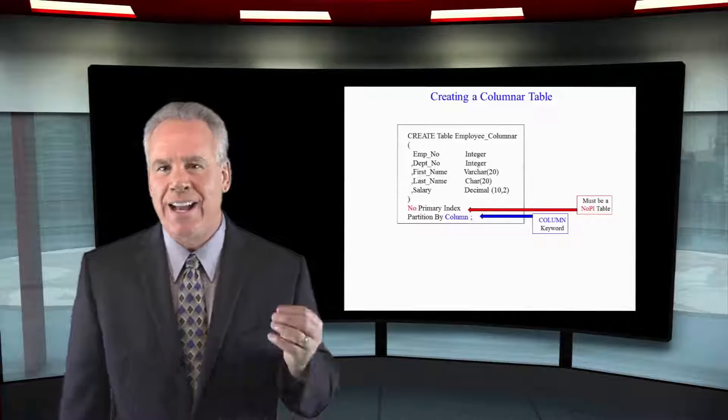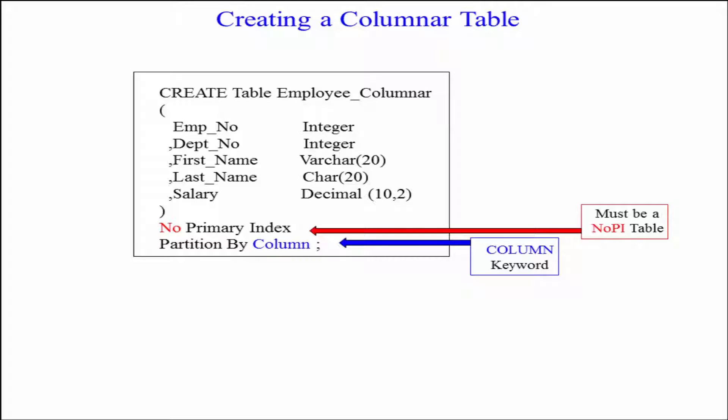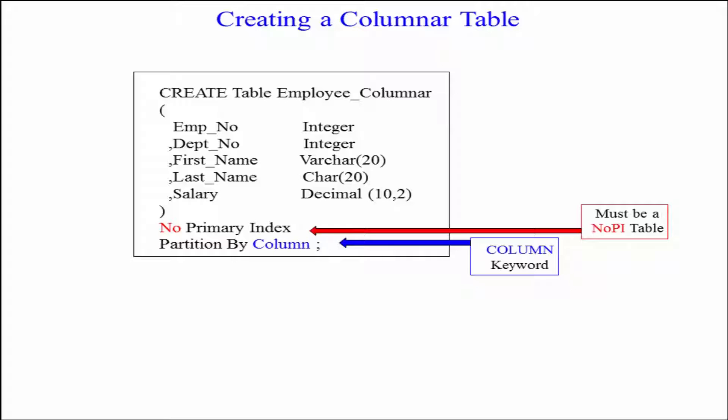This is how you create a columnar table in Teradata. Create table, I give it a name, open paren, I list all the columns and the data types, close paren, then I have to say no primary index. It's a no PI table, just spread the data evenly and then I say partition by column. I've got a columnar table.